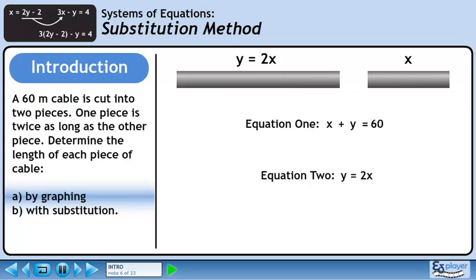We'll now complete part A, which asks us to solve the system of equations graphically. The first equation needs to be rewritten in slope-intercept form so we can graph it.